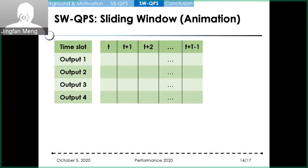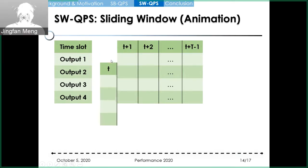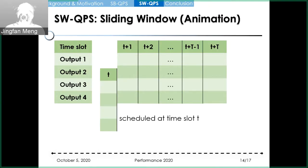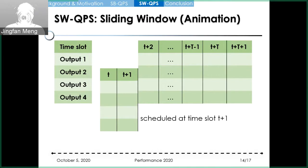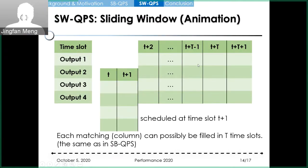Here we show how sliding-window QPS generates one matching each time slot using this animation. Here is a batch of capital T time slots and capital T matchings. Each matching is a column in this figure. At time slot t, the first matching in this batch is scheduled, and we add a new empty matching to the end of this batch, so that this batch always contains T matchings. At time slot T plus one, we perform the same operation: the first matching is scheduled and a new matching is added. As this batch slides forward in time, each matching stays in this batch and can be filled with proposals for T time slots, the same as in a static batch in small-batch QPS.